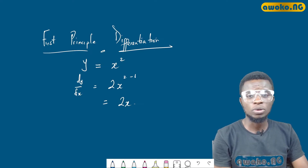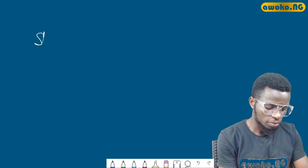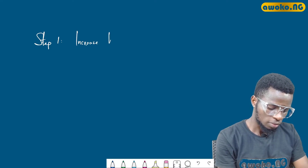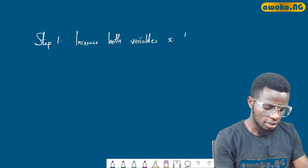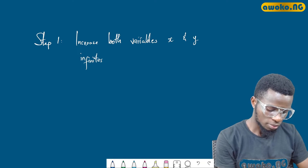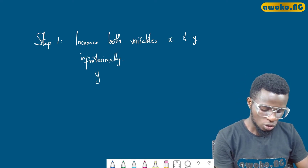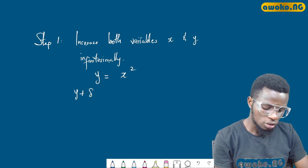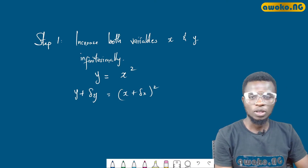Using first principle differentiation, I'm going to give you some steps you can follow. Step one is to increase both variables x and y infinitesimally — that is, using a very small increase or change. So if we have the function y = x², we increase x and y infinitesimally to get: y + δy = (x + δx)². Let's call this equation one.